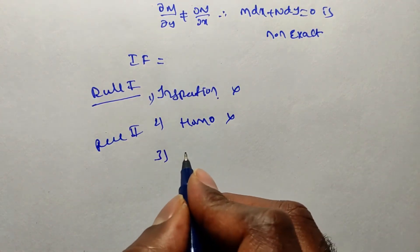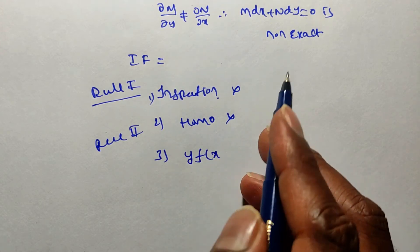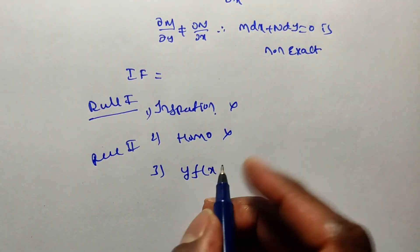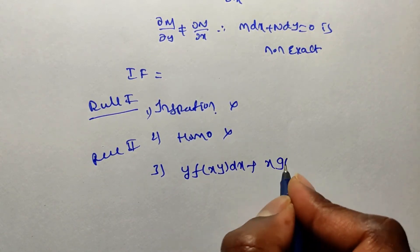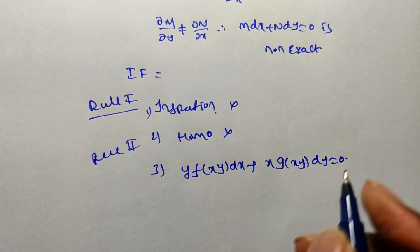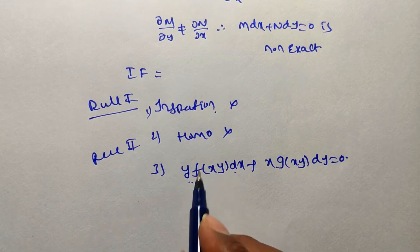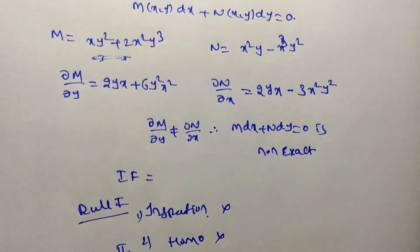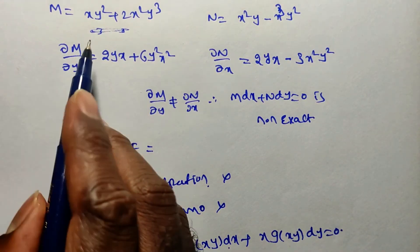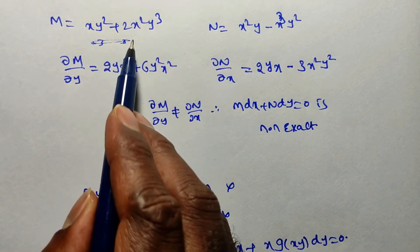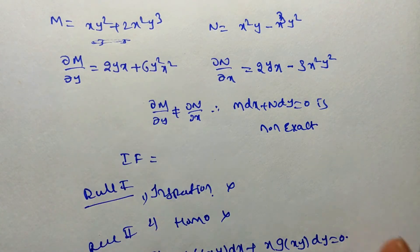Now go to Rule 3. Rule 3 requires the equation to be in the form y·f(xy)dx + x·g(xy)dy = 0. In this form, the dx term should have y as a common factor, leaving f(xy). Taking y common from M = xy² + 2x²y³ gives y(xy + 2x²y²), which is a function of xy.